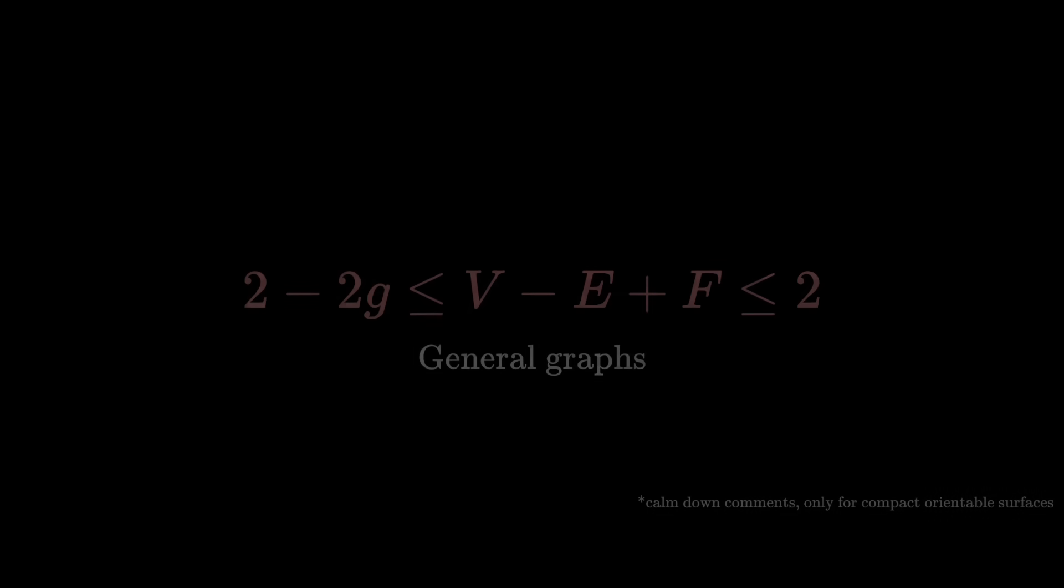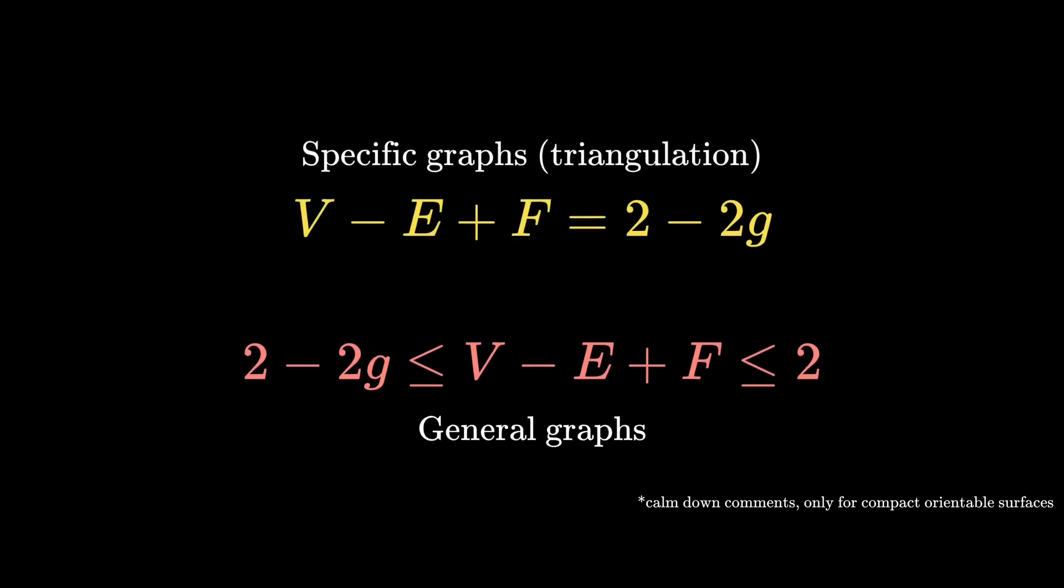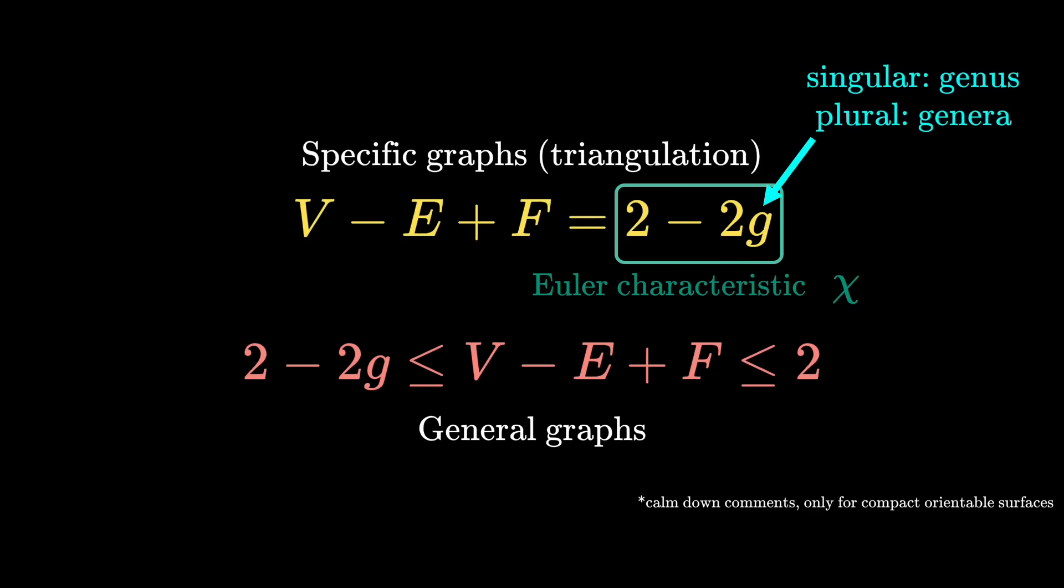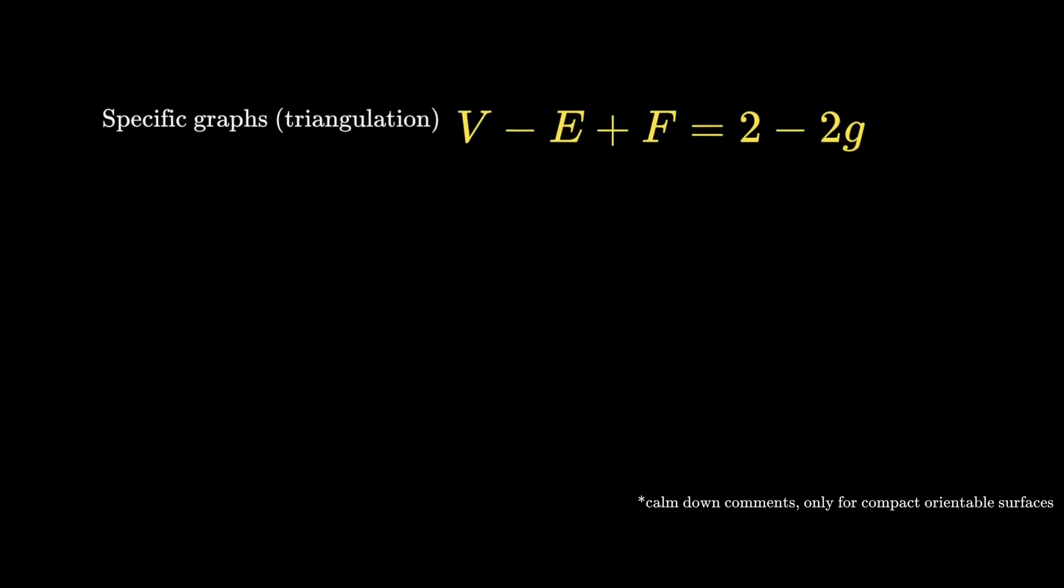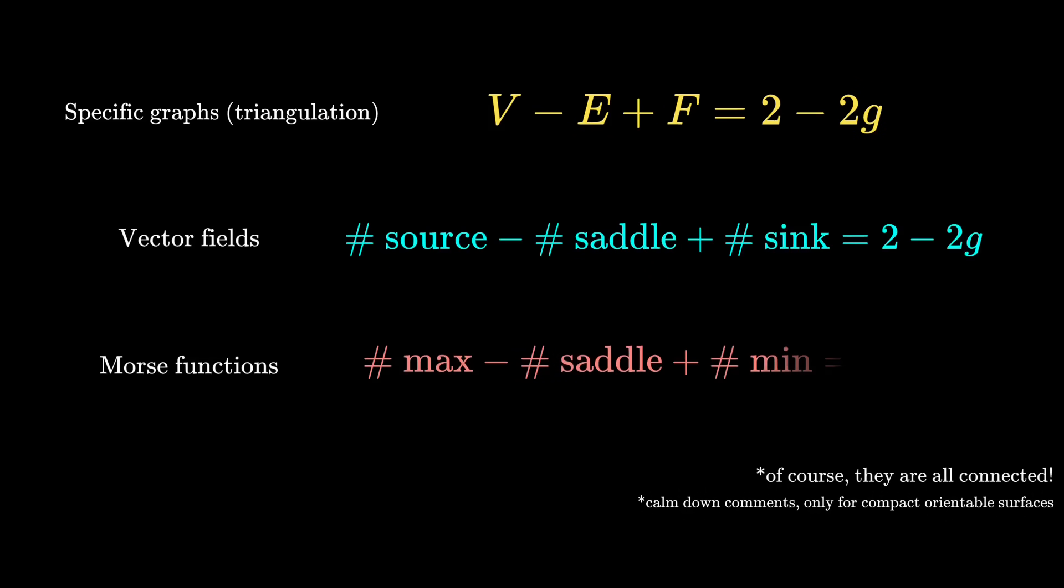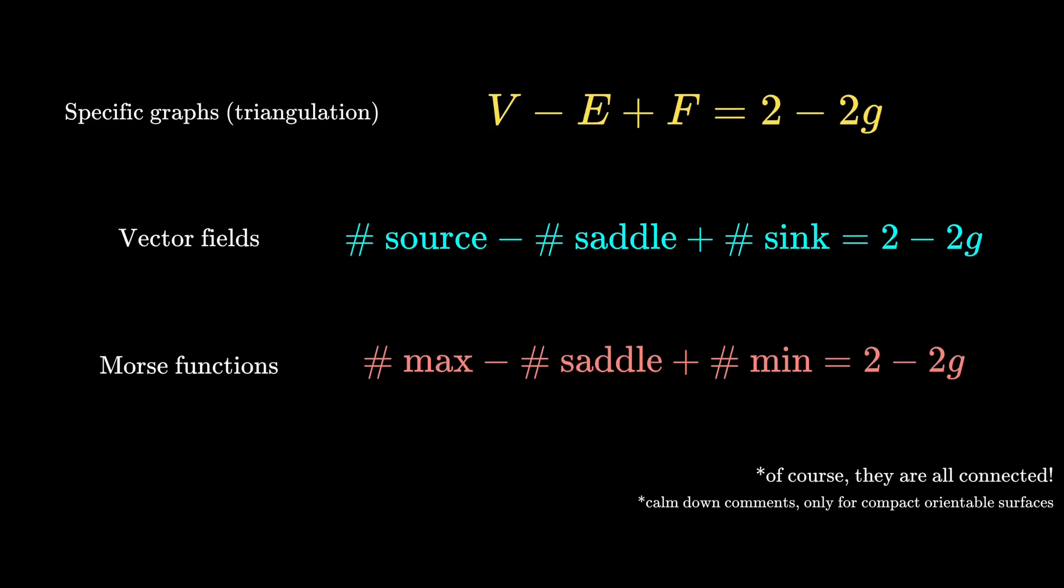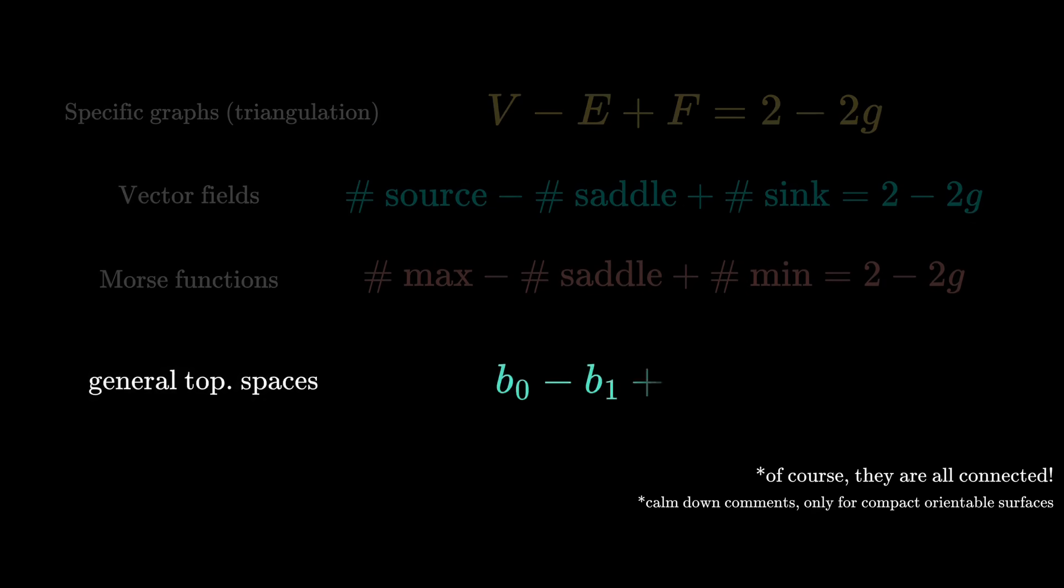While we did prove this more general inequality, which will be useful in the next video, there are plenty of reasons why most people only consider the special case. This lower bound, known as Euler characteristic, usually denoted as chi, is useful in distinguishing surfaces with different genera. Yes, the plural of genus is genera. Not only is it useful in differentiating between different surfaces, Euler characteristic appears in places seemingly unrelated to graphs, from vector fields to something called Morse functions. You can go to the description to see what those are, but I want to highlight one other place where Euler characteristic comes up.